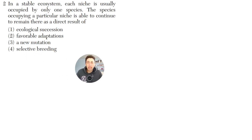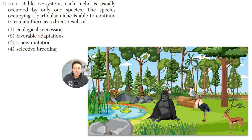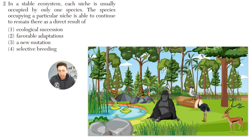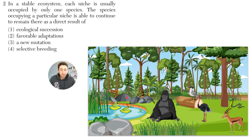Question two: in a stable ecosystem, each niche is usually occupied by only one species. The species occupying a particular niche is able to remain there as a direct result of — ecological succession, favorable adaptations, a new mutation, or selective breeding. An ecosystem is the interaction between living organisms and the physical environment — the biotic with the abiotic factors. Each niche is what the organism does: the frog sits on a lily pad and eats bugs, worms are in the ground, squirrels look for nuts.